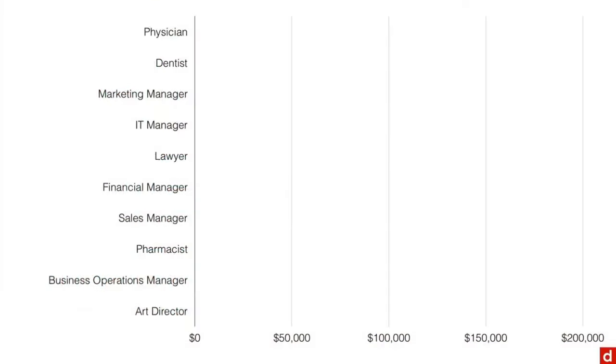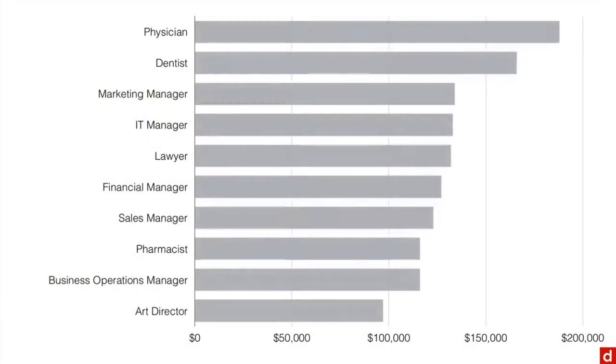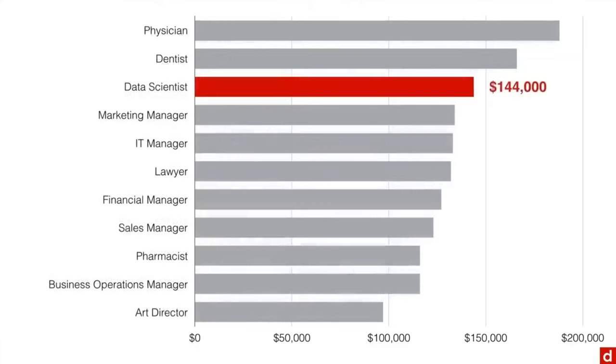For instance, here's the list of the top 10 highest paying salaries that I got from US News. We have physicians or doctors, dentists and lawyers and so on. Now, if we add data scientists to this list using data from O'Reilly.com, it goes in third with an average total salary, not the base, but the total compensation of about $144,000 a year. That's extraordinary.